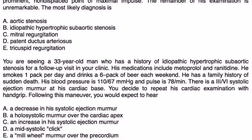And finally, you are seeing a 33-year-old man who has a history of idiopathic hypertrophic subaortic stenosis for a follow-up visit in your clinic. His medications include metoprolol and metformin. He smokes one pack a day, drinks six packs of beer each weekend. He has a family history of sudden death. His blood pressure is 110 and pulse is 78. There is a 3 out of 6 grade systolic ejection murmur at the cardiac base. You decide to repeat his cardiac exam with hand grip. Following this maneuver, you would expect to hear.